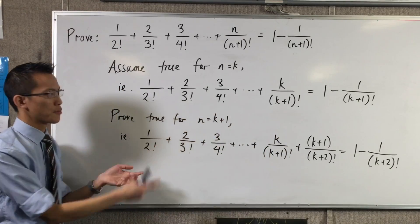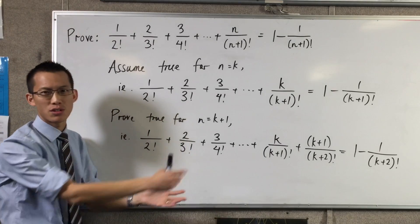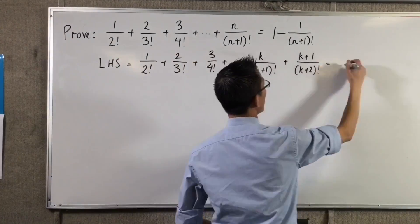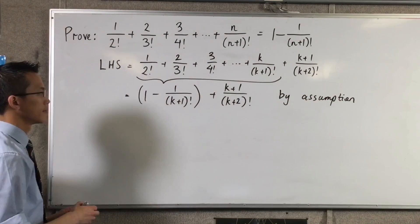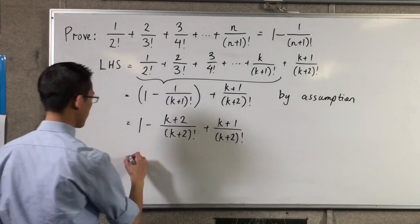Everything in this line up until k on k plus 1 factorial is included in my assumption. That means I can use the assumption, also called the inductive hypothesis, and make a substitution. Remembering that I assume that these two are equal to each other, I replace one with the other. Now all that remains is to work with what's left behind to show that it's equal to the right hand side.